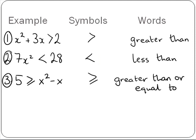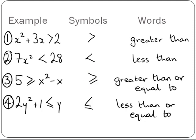In our third example it reads, 5 is greater than or equal to x squared minus x, and the symbol used in this one is greater than or equal to. And in our final example, 2y squared plus 1 is less than or equal to y, the symbol we can see here means less than or equal to.